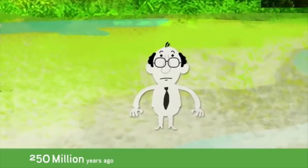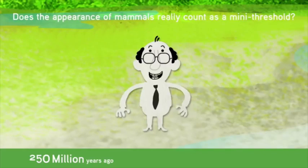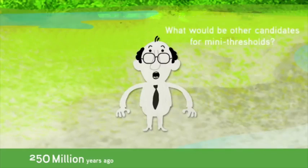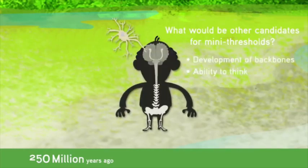Does the appearance of mammals really count as a mini-threshold? Or is it just because we are mammals that we think so? What would be other candidates for mini-thresholds, by the way? The development of backbones? The ability to think? Or what about the concept of family?